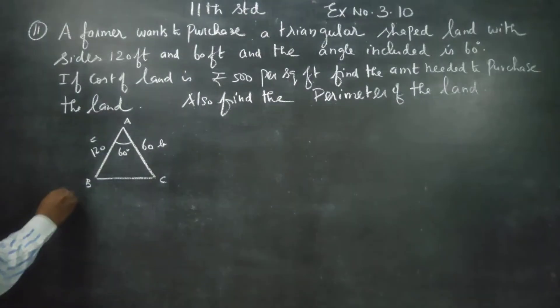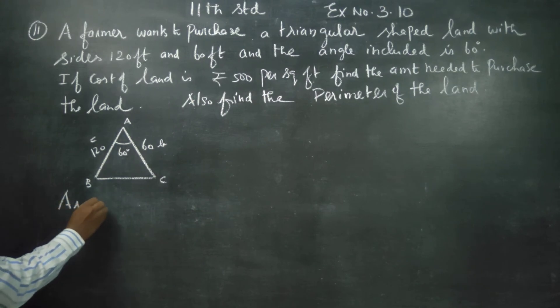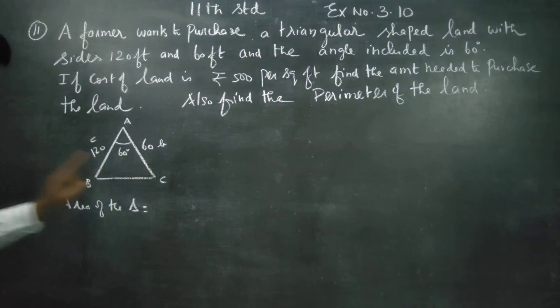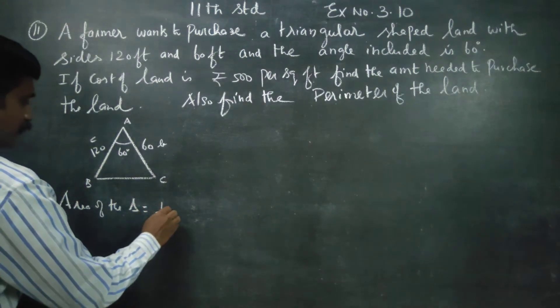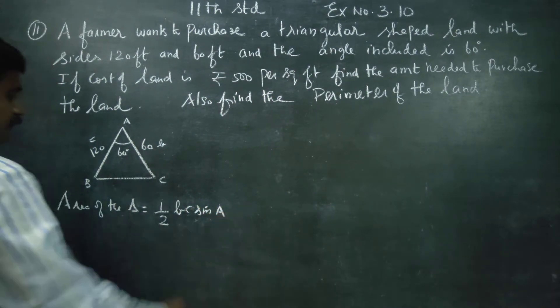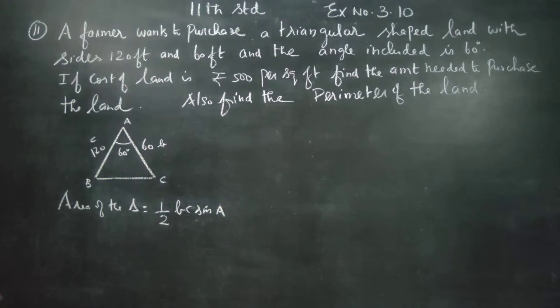Now we have the area of the triangle. If there are 3 sides, we can go for Heron's formula, or we can go for half of bc sin A. Half bc sin A.